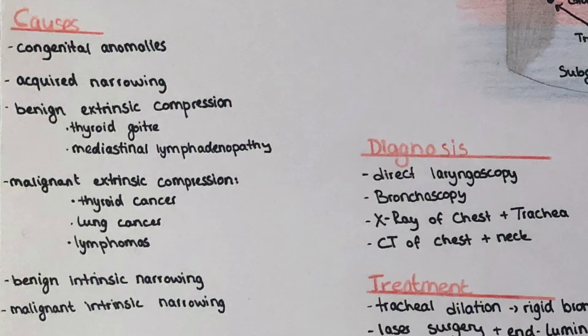There can also be a benign intrinsic narrowing at the level of the glottis. Those include bilateral vocal fold paralysis, laryngeal trauma, foreign body inhalation, sarcoidosis, amyloidosis, infections, and also a congenital laryngostenosis.